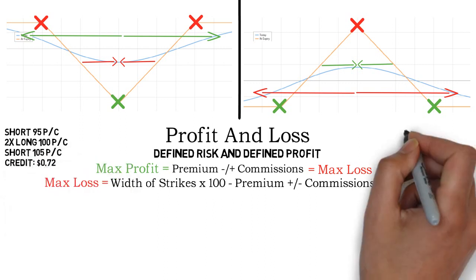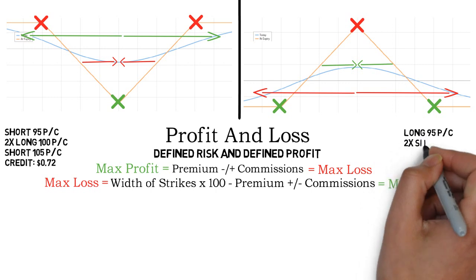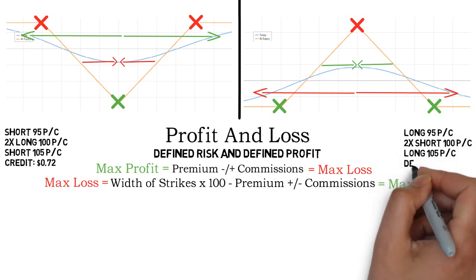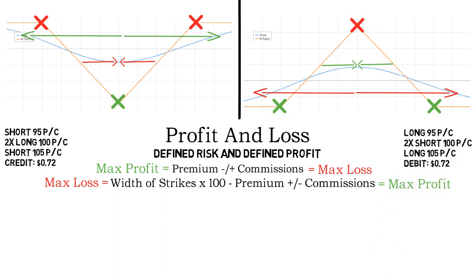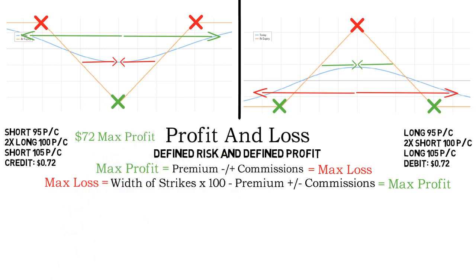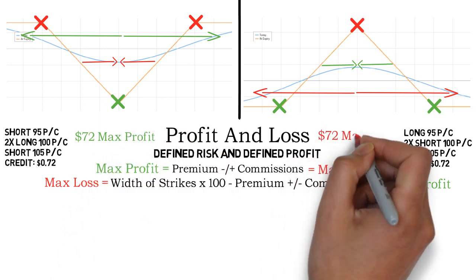The strikes for the short and long example butterfly spread are 95, 100 and 105. The premium paid or taken in is $72. Note that option prices are quoted in quantities of 1 even though the standard quantity is 100, so I write $0.72 when I mean $72. Max profit for our short butterfly spread is $72, and this is also the max loss for the long butterfly spread.